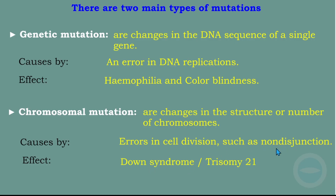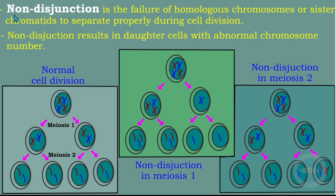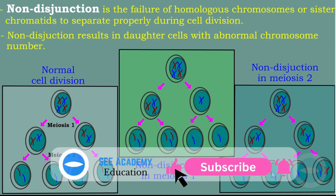A non-disjunction is the failure of homologous chromosomes or sister chromatids to separate properly during cell division, resulting in daughter cells with an abnormal chromosome number. In normal cell division, if we start with four chromosomes, we end up with two chromosomes in each cell. In abnormal cell division — non-disjunction — instead of two, some cells end up with three chromosomes and others with one, producing an unequal distribution. This is the result of non-disjunction and chromosomal mutation.